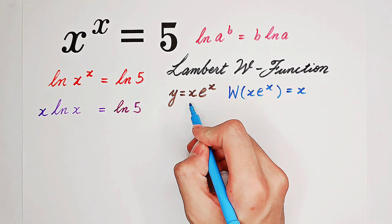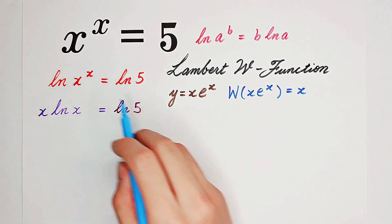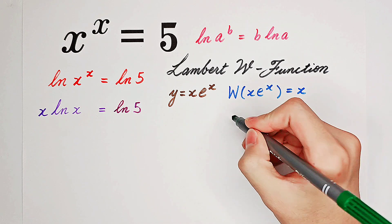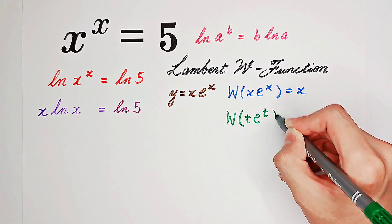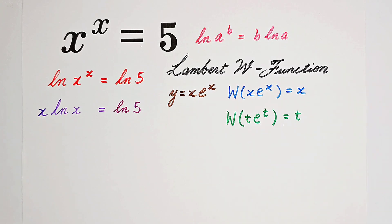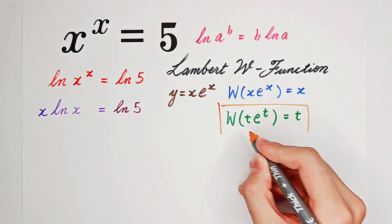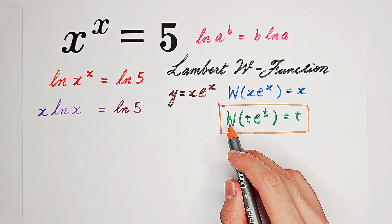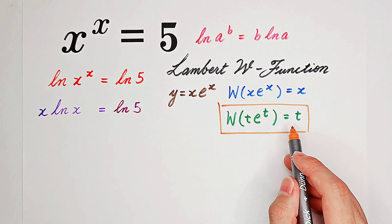It may be confusing that this x is not the same as our x in our context. So we can write it like this: the Lambert W function of t times e to the power of t equals t. Just remember this one — t can be anything, so we can replace t with anything. For example, the Lambert W function of a flower times e to the power of the flower equals the flower.